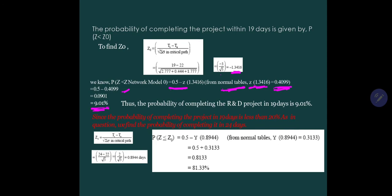The probability is very much less. The probability of completing the R&D project in 19 days is 9.01 percent, only 9.01 percent. Since the probability of completing the project in 19 days is less than 20 percent, we have to increase the days. So let's try another example.